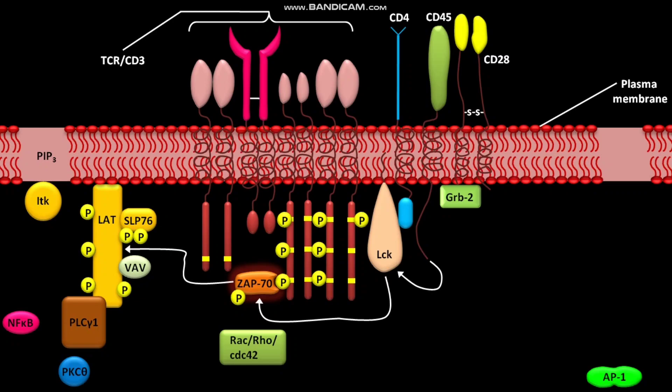Phosphorylated LAT also binds to the adapter protein GADS, which is constitutively associated with SLP76. A kinase called ITK phosphorylates tyrosine on inactive PLC-γ1. Due to this phosphorylation, the inactive PLC-γ1 becomes active.